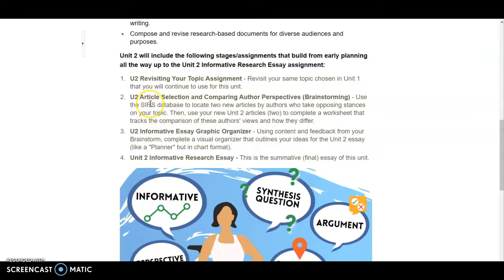The second formative assignment is called the article selection and comparing author perspectives assignment. This is a brainstorming assignment. You will be using the SURS database that our Delaware Tech Library subscribes to, and you will find two new articles. These articles will be written by authors or groups of authors who have something new to say about your topic.